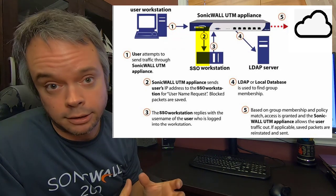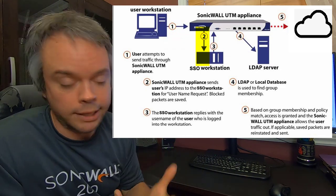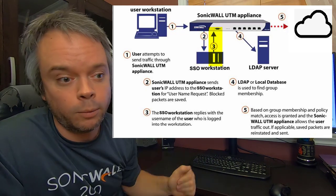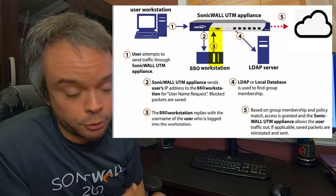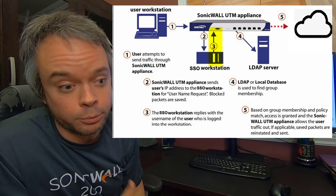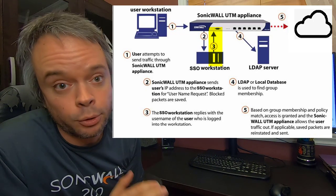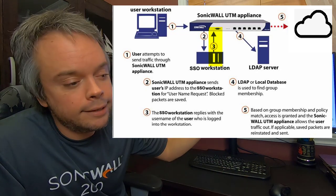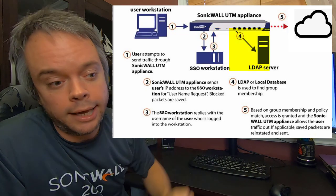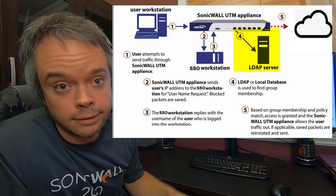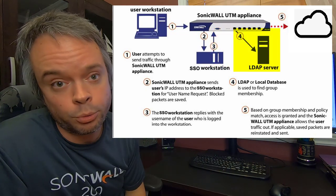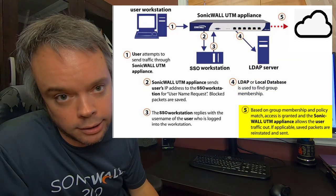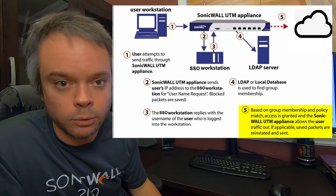Once the single sign-on agent finds out that, say, David is connected on that IP, it replies to the firewall. The firewall then connects to Active Directory to find out which groups David is a member of, gets that information, and applies policy accordingly. That's how single sign-on works.